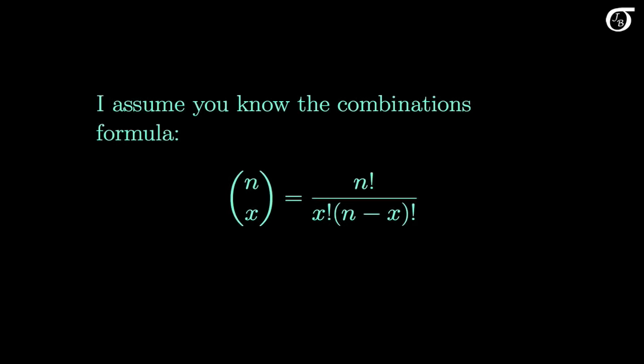Let's look at an introduction to the hypergeometric distribution, another important discrete probability distribution. I'm going to assume that you know the combinations formula, also known as the binomial coefficient, both its meaning and how to calculate it, because it's going to play a big role in the hypergeometric distribution. If you don't recognize this, you should look into it before watching this video. I'm also going to assume that you've previously been introduced to the binomial distribution, because I'm going to be comparing the binomial and hypergeometric distributions here.